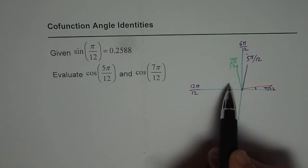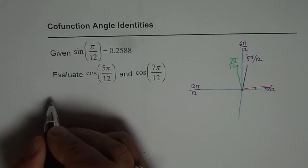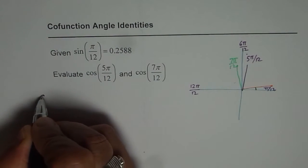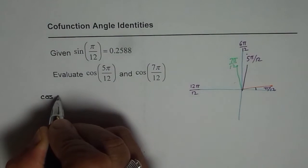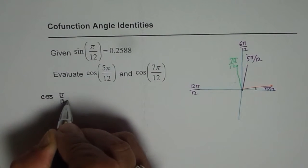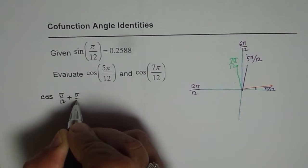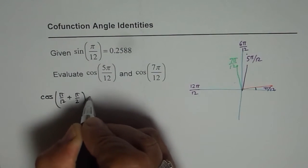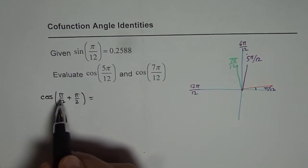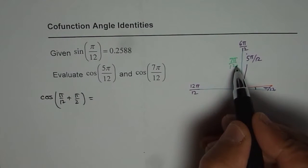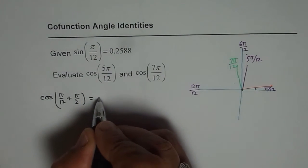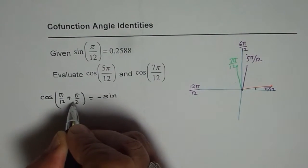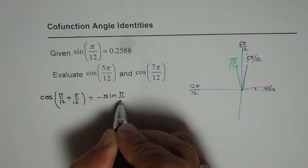So what we can see from here is that cos of π/12 plus π/2 is actually equals to, when you say cos of π/12 plus π/2, cos is in quadrant 2, cos is negative in quadrant 2. So this is equal to minus sin of π/12.